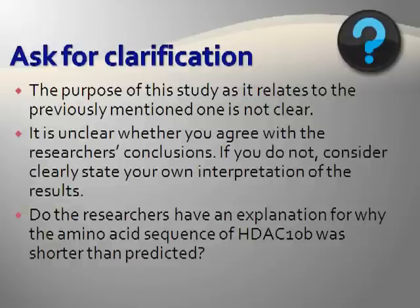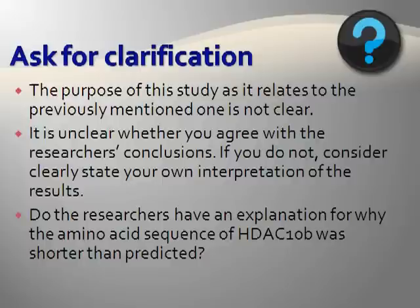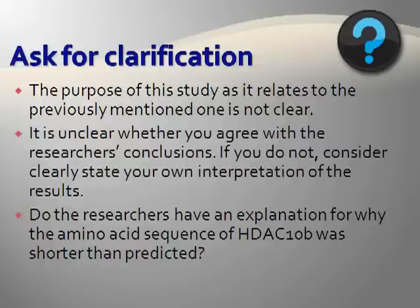Ask for clarification, and be specific with these types of comments as that will be most helpful to the author. The sample comments here are taken out of context, but you could envision that if they are pointing to a specific sentence, paragraph, or section of the literature review article, the author would understand the reviewer. For example: 'The purpose of this study, as it relates to the previously mentioned one, is not clear.' In this case, the reviewer is confused as to the relationship between two different studies the author mentions, or why the author included the second study. Another example: 'It is unclear whether you agree with the researcher's conclusions. If you do not, consider clearly stating your own interpretation of the results.' This comment is likely found in the discussion section. A further example: 'Do the researchers have an explanation for why the amino acid sequence of HDAC10b was shorter than predicted?' This is a comment I received on a peer review article that I submitted. The reviewer, rightfully so, thought that I'd left out an important explanation regarding my findings.